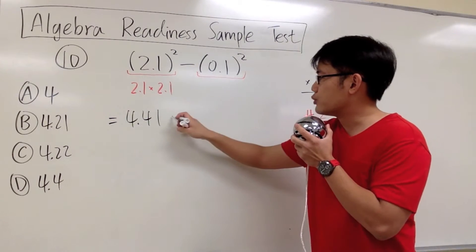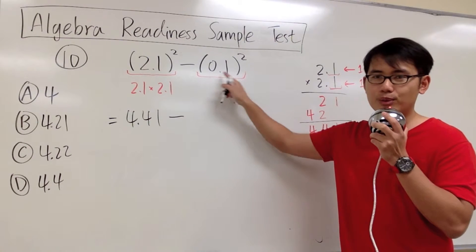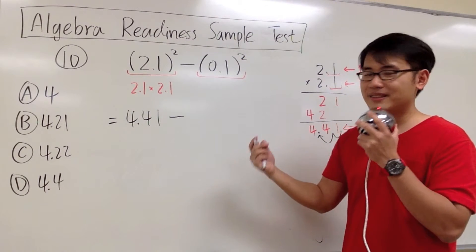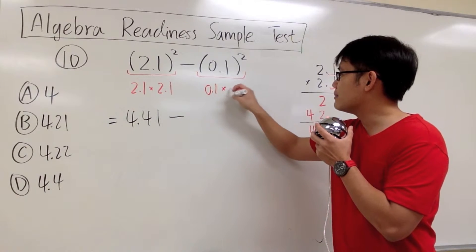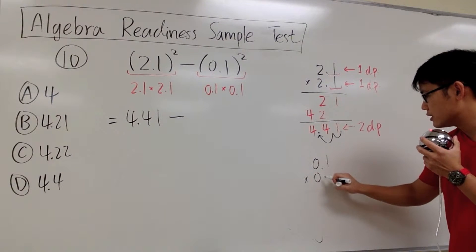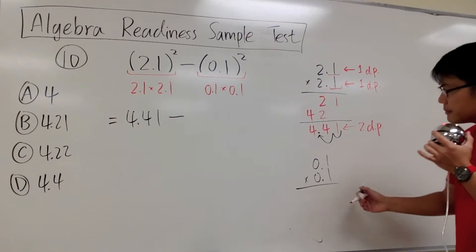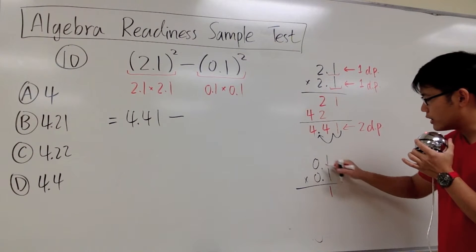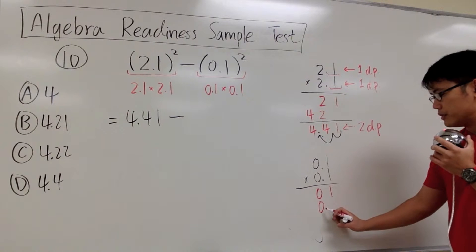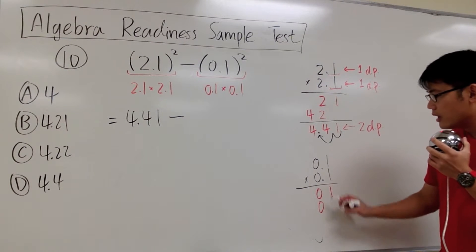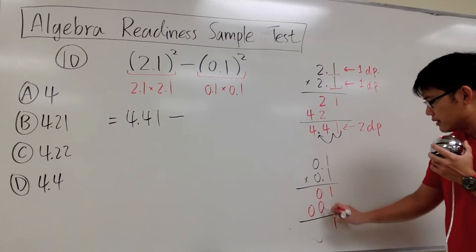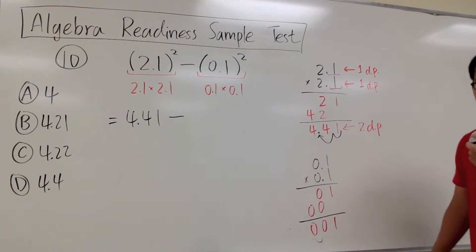Now let's focus on working this out: 0.1 to the second power. Once again, the second power tells us to write down this number twice and then multiply them together. We have to do 0.1 times 0.1. Let's do it quickly right here: 0.1 times 0.1. It's pretty much the same setup. 1 times 1 gives us 1. 1 times 0 gives us 0. Then we move to this 0. 0 times 1 gives us 0. Then we combine — we get 1, and 0 plus 0 gives us 0. And then this is just 0.